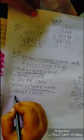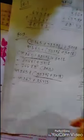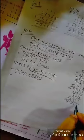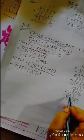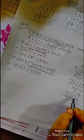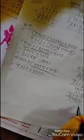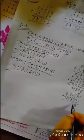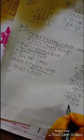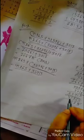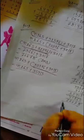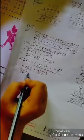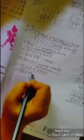Now we add 41,265 plus 35,413. 5 plus 3 is 8. 6 plus 1 is 7. 2 plus 4 is 6. 1 plus 5 is 6. 4 plus 3 is 7. Our answer is 76,678.